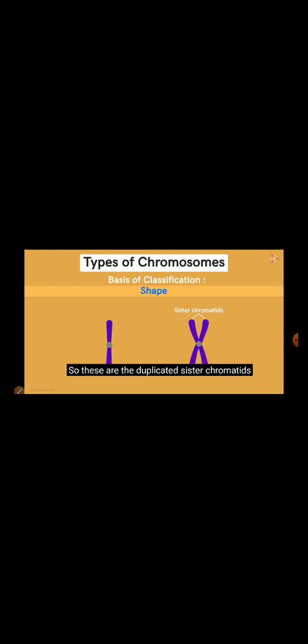So, these are the duplicated sister chromatids, which are attached to the same chromosome. Now, to understand the types, let's first understand the typical structure. Here, these two regions are called the arms of the chromosome.